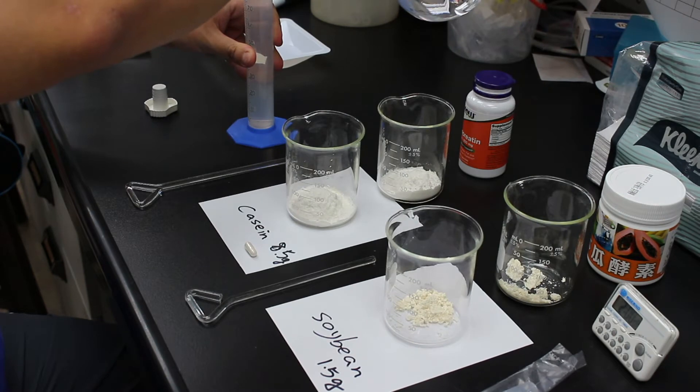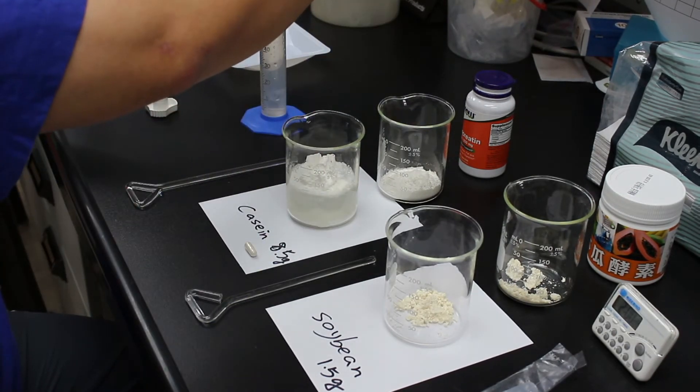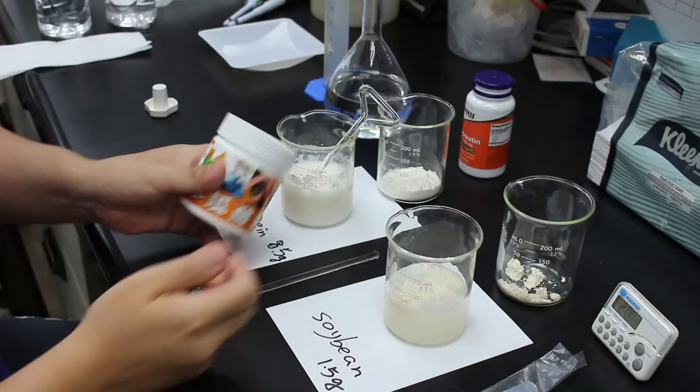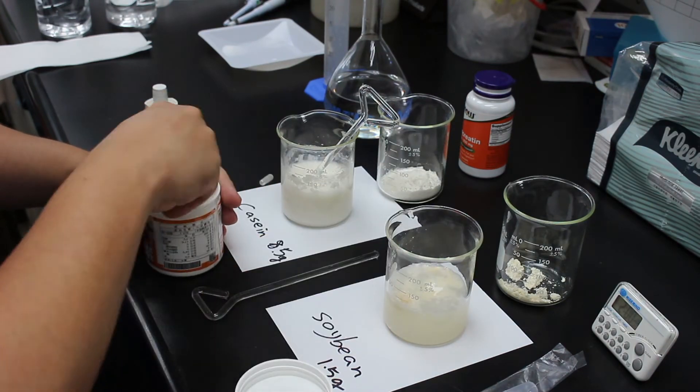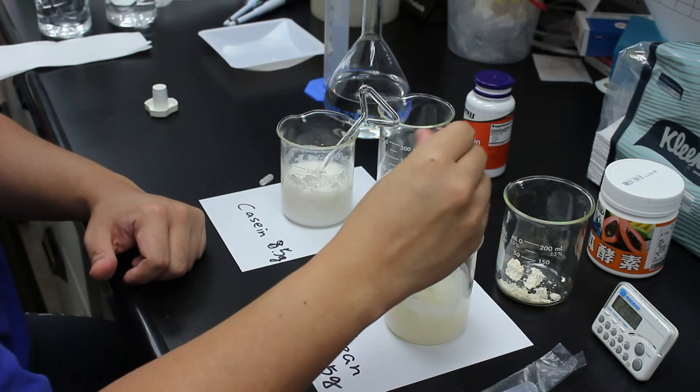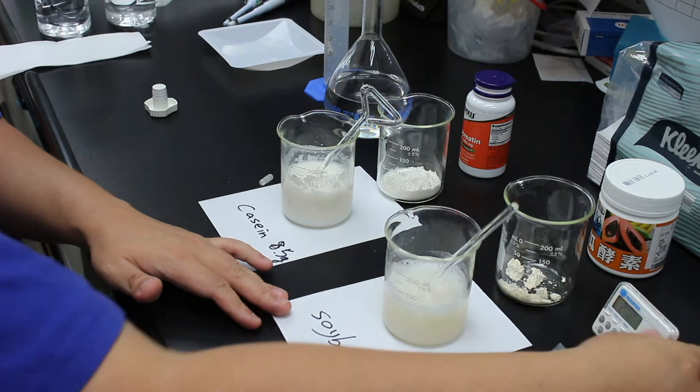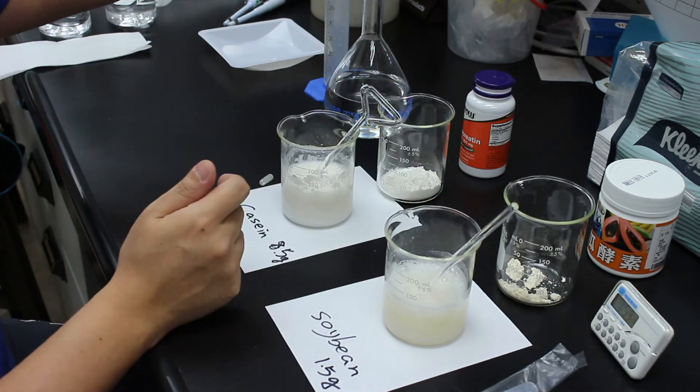First I add 100ml of water to casein and soybean and mix them up, then I add enzyme into each of them. I have 2 beakers here because I plan to try 2 different digest times, 2 hours and 4 hours, and compare them at the end. After adding the enzyme, I adjust the pH value to around 8 and let it react.